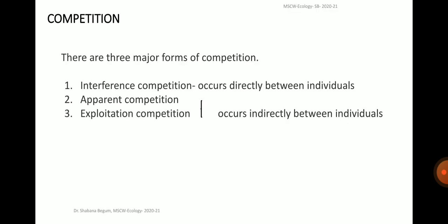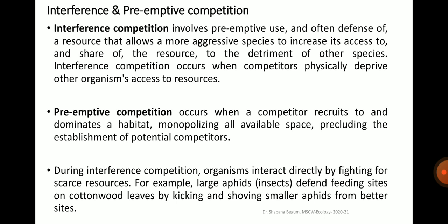Competition is of three major types: interference competition, which occurs directly between individuals; and apparent competition and exploitation competition, both of which occur indirectly between individuals. Interference competition involves preemptive use and often defense of a resource, allowing a more aggressive species to increase its access and share of the resource to the detriment of other species. Preemptive competition occurs when a competitor recruits to and dominates a habitat, monopolizing all available space and precluding the establishment of potential competitors.